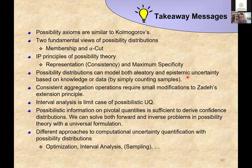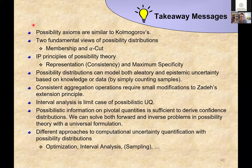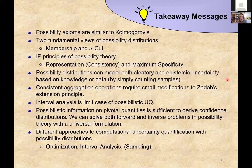This concludes my talk. The key takeaway messages: possibility theory can be derived very similarly to probability theory, with two fundamental views giving rise to different numerical approaches. We have two imprecise probability principles: representation and maximum specificity. We've seen how to model both aleatory and epistemic uncertainty from knowledge and from data. We have consistent aggregation operations and interval analysis as the limit case of possibility UQ. Possibility variables can be used as pivotal quantities in statistical inference, and we have three different numerical approaches.